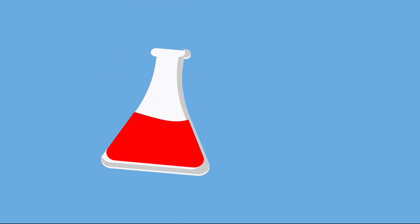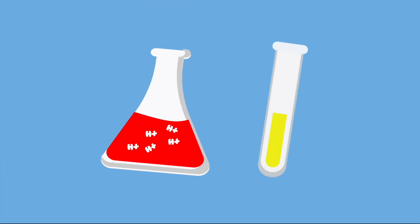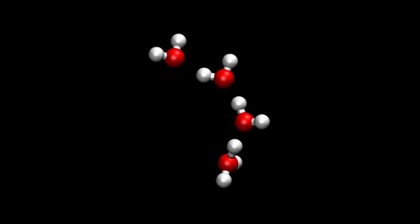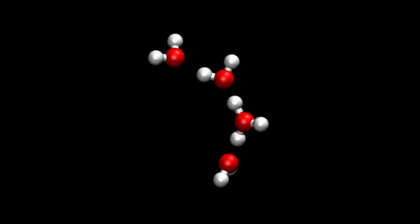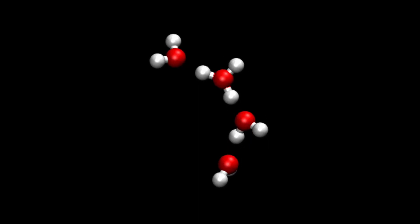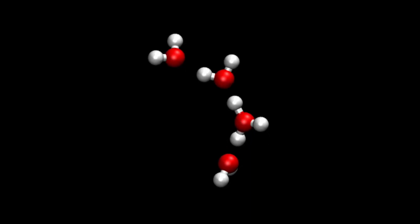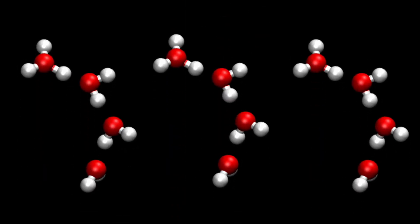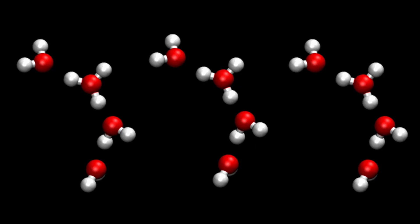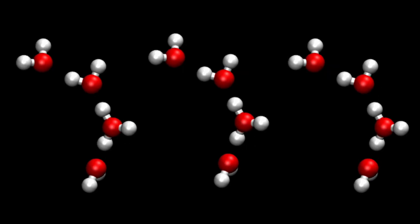In a solution, the concentration of hydrogen ions, or H+, and hydroxide ions, OH-, play a crucial role in determining its acidity or basicity. When there is a higher concentration of hydrogen ions in a solution, it is considered to be acidic. The presence of hydrogen ions indicates the availability of protons, which can donate or release hydrogen ions to other substances. Acids are substances that can donate hydrogen ions, and the more hydrogen ions present, the stronger the acid.